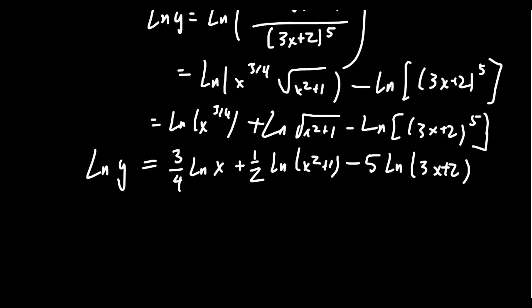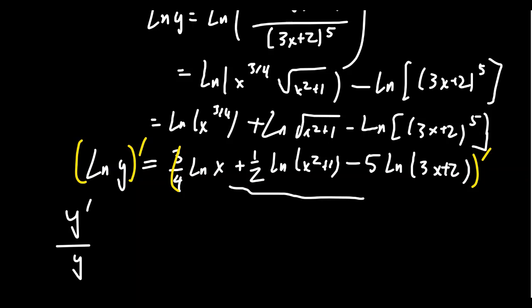Next, we take the derivative of all of these terms. On the left-hand side, when doing logarithmic differentiation, the left side always looks the same — it always gives y prime over y. By properties of the natural log, when you take the derivative of a function you get one over that function, then multiply by the inner derivative due to the chain rule, giving y prime over y. On the right-hand side, we just have to take the derivative of each logarithm.